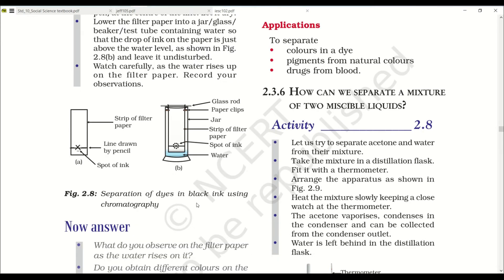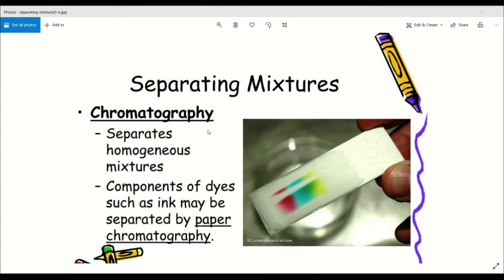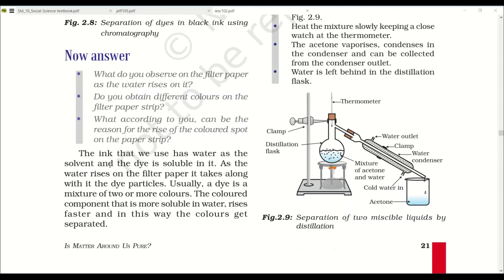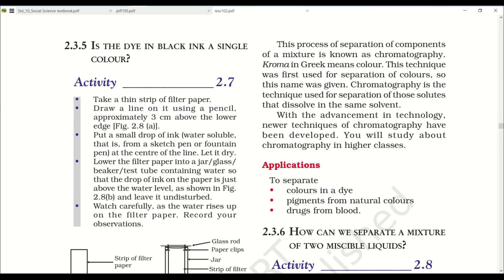This is the method of chromatography where you separate homogeneous mixtures. Components of dye such as ink may be separated by paper chromatography. Here you can see the colors have been separated. The ink that we use has water as a solvent and dye is soluble in it. As the water rises on the filter paper, it takes along with it the dye particles. Usually a dye is a mixture of two or more colors. The colored component that is more soluble in water rises faster and in this way the colors get separated. This process of separation is known as chromatography. Chroma in Greek means color. This technique was first used for separation of colors, so this name was given.